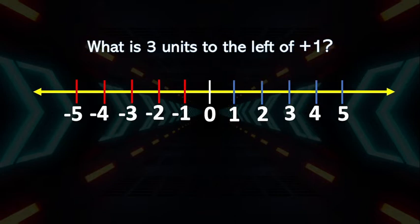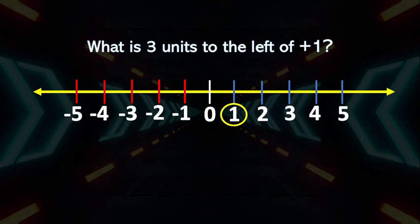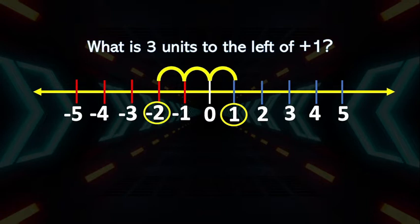Let's have another example. What is 3 units to the left of positive 1? This means that we need to move 3 units to the left of 1. We get negative 2. This represents subtraction — 1 minus 3 is equal to negative 2.